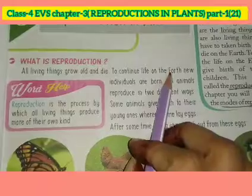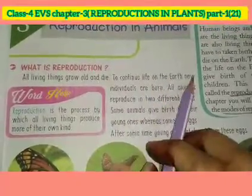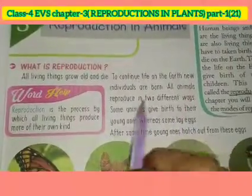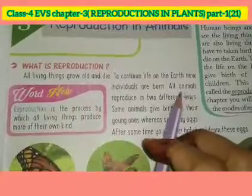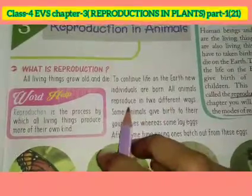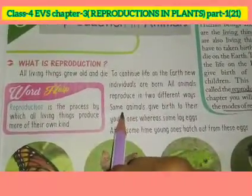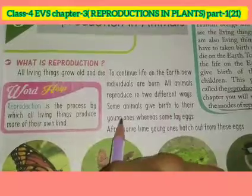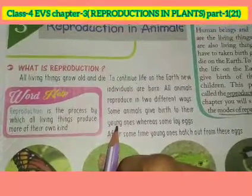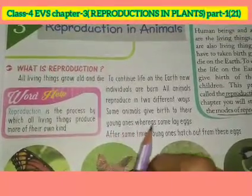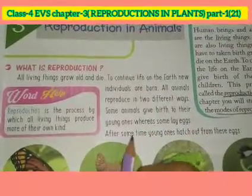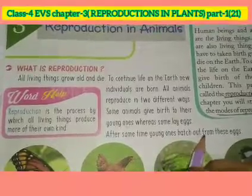तो यह जो process है, अर्थ पर continuously चलती रहती है। New individuals are born. All animals reproduce in two different ways — वो दो different अलग-अलग तरीकों से reproduce होते हैं। Some animals give birth to their young ones, whereas some lay eggs. After some time, young ones hatch out from these eggs.